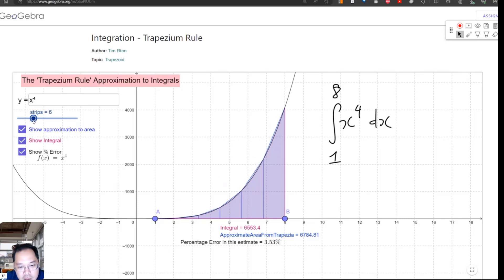[Vietnamese] 4 trapezoids, 5, 6, 7, 8. The more we divide this shape into more trapezoids, the more accurately we can estimate.